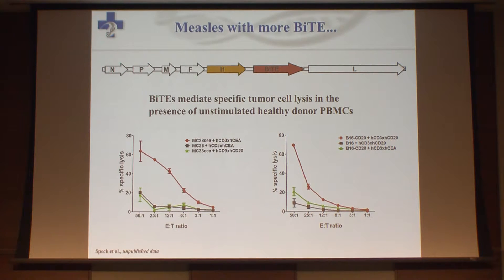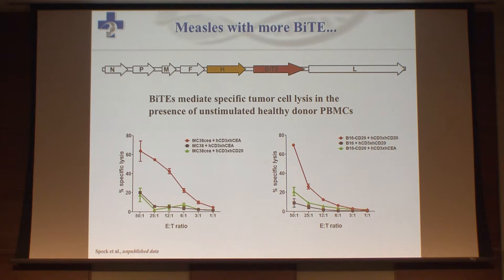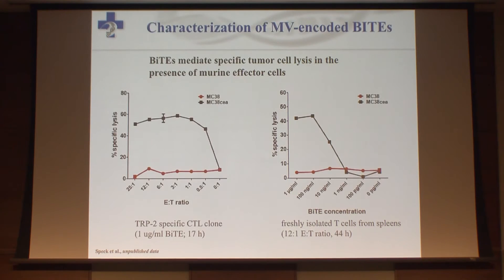The previous speaker mentioned the success story of BiTEs. We generated measles viruses encoding bispecific antibodies, and again get high levels of protein when infecting cancer cells with this virus. We could show specific cell lysis using PBMCs from healthy donors, mediated by the immunological synapse of the BiTE — demonstrated in colorectal cancer and melanoma models. Using murine effector cells with a murine TRPV2-specific T-cell clone, the cells were highly efficiently killed mediated by the BiTE encoded on the measles virus.